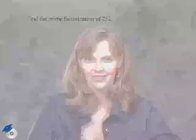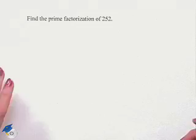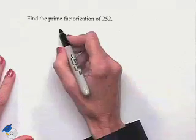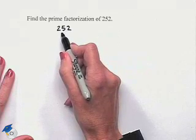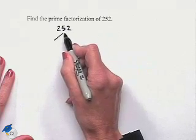Now let's work a problem dealing with prime factorization. Find the prime factorization of 252. We're going to use a factor tree to determine this. We can notice that 2 will divide 252, so let's go ahead and use that fact.